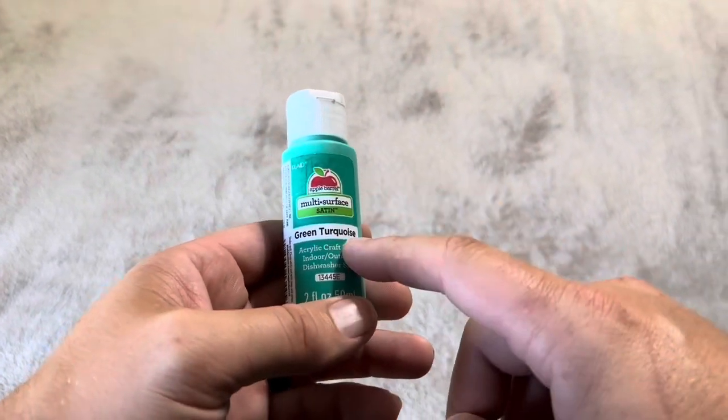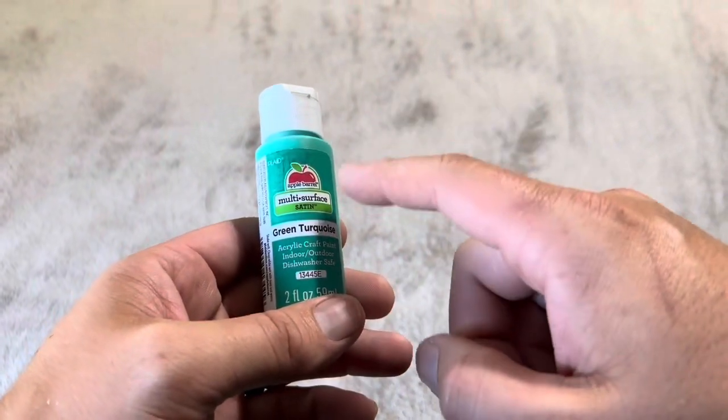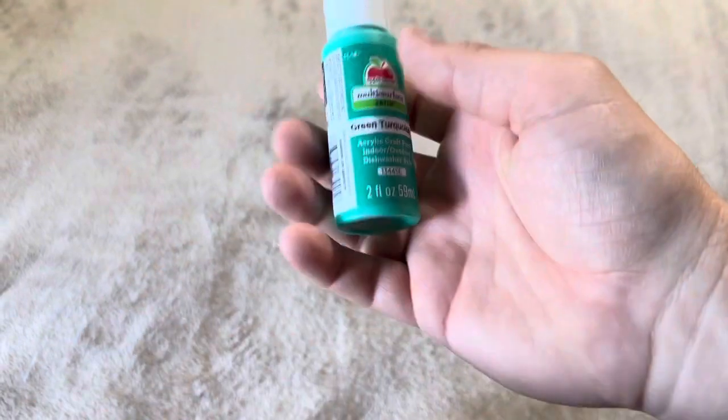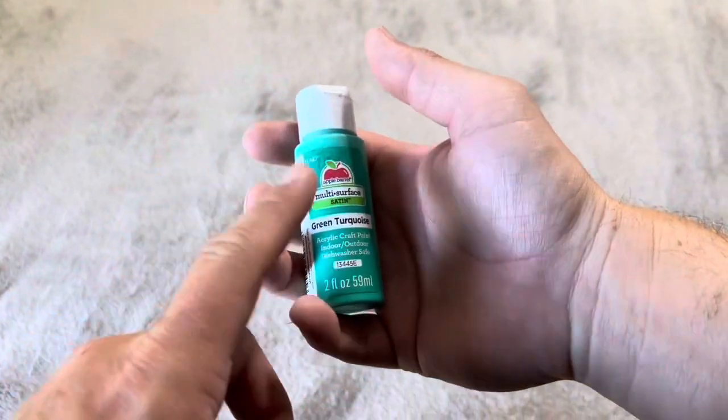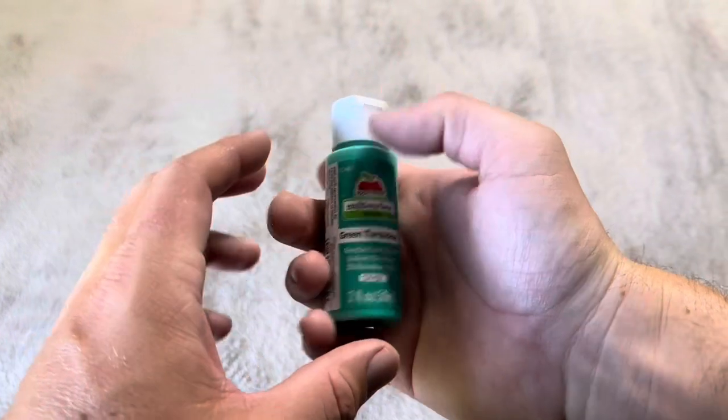Today I'm reviewing this multi-surface satin green turquoise paint that I purchased from Apple Barrel. This is a two fluid ounce bottle, which is a traditional size, not a half size or anything like that.